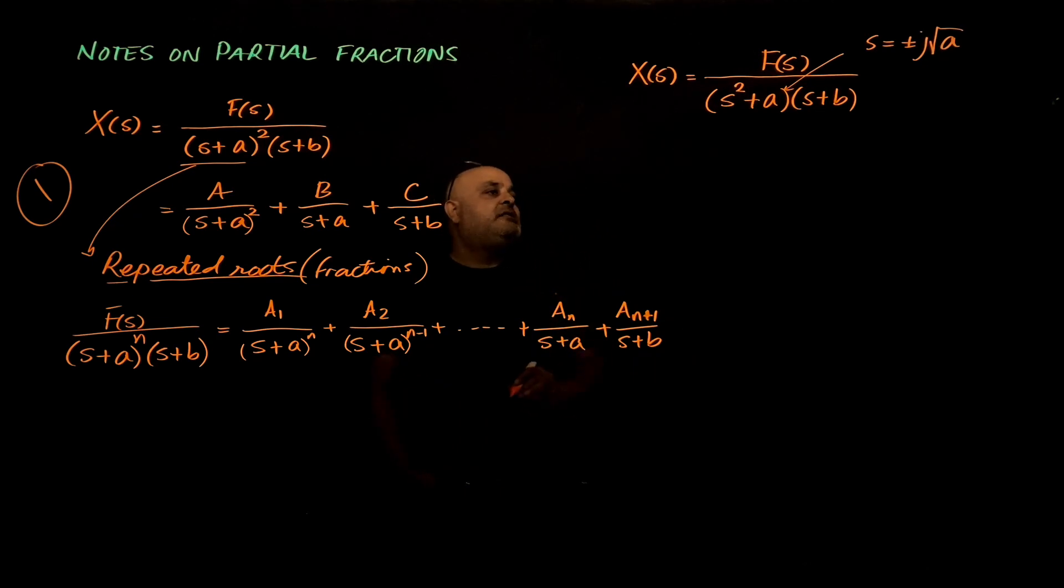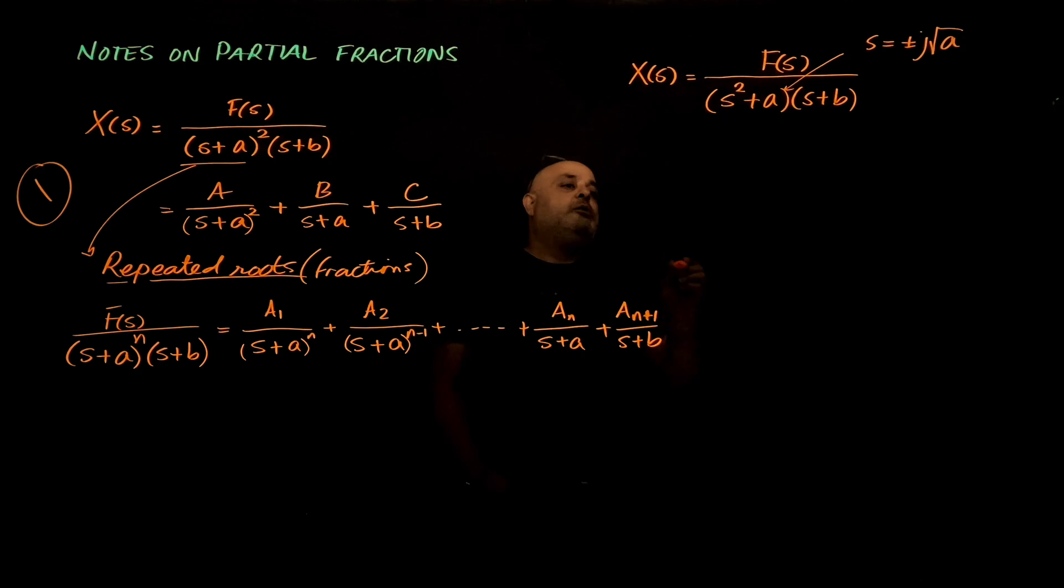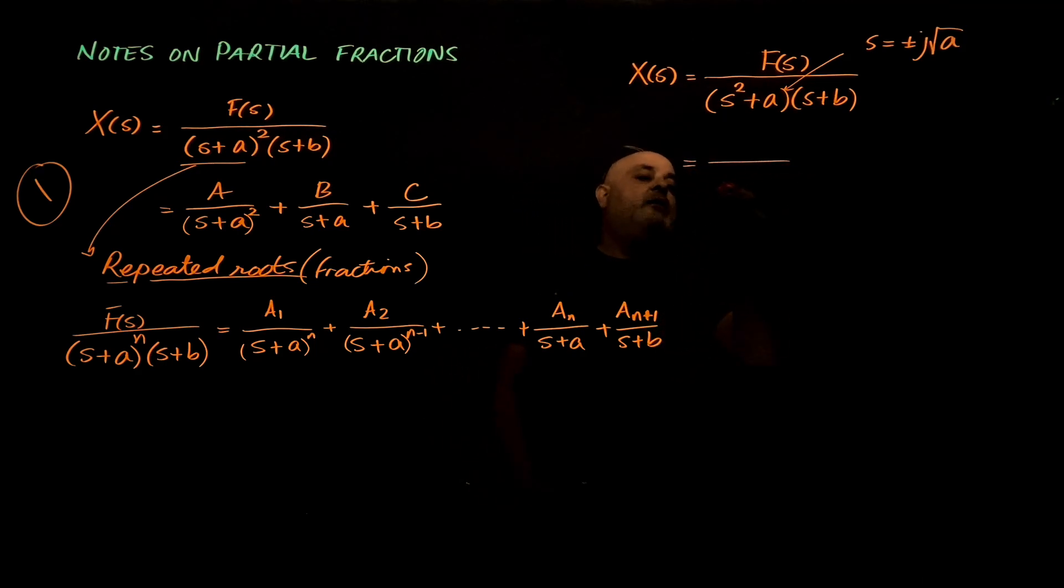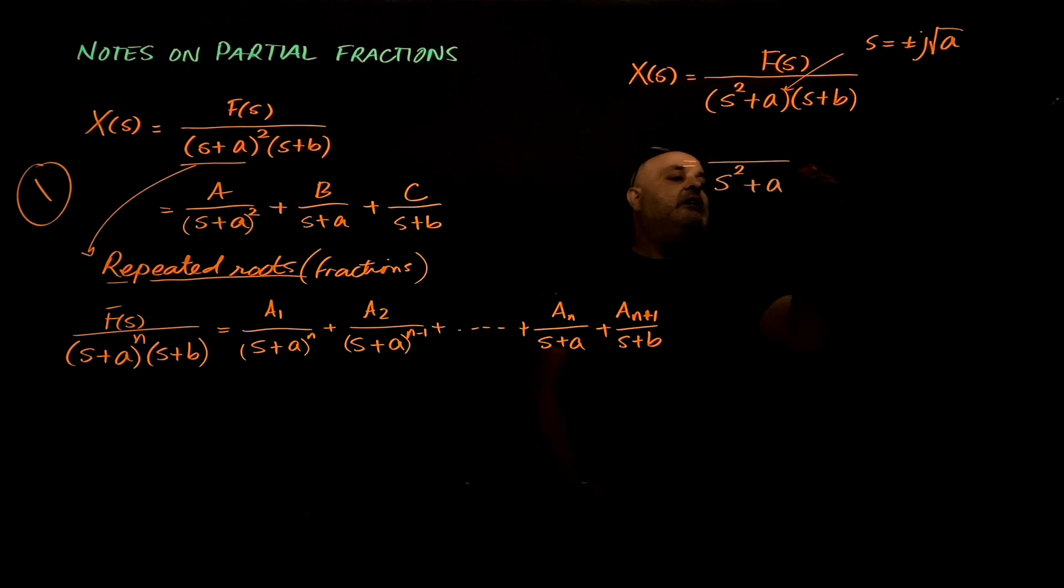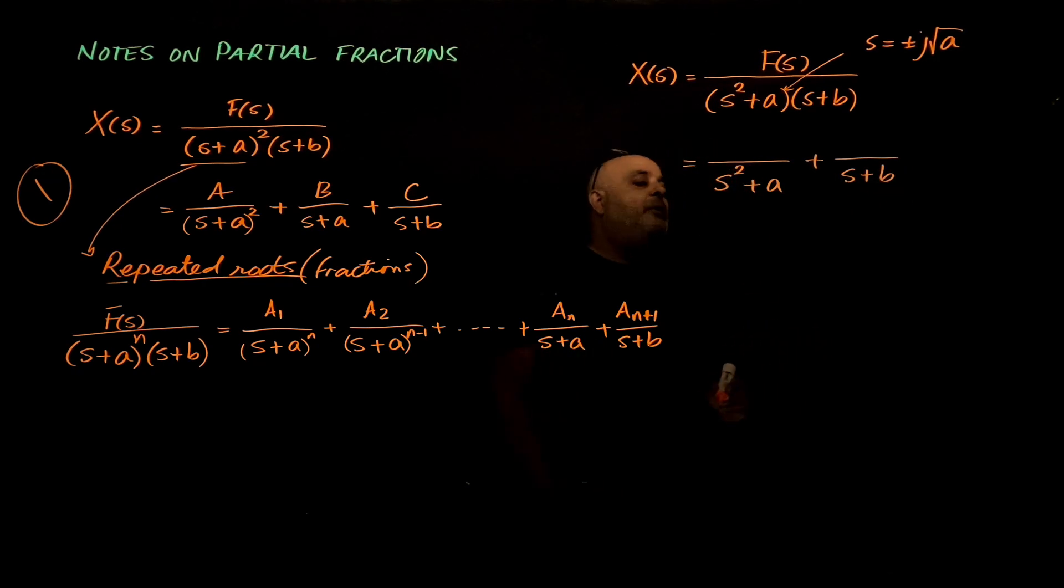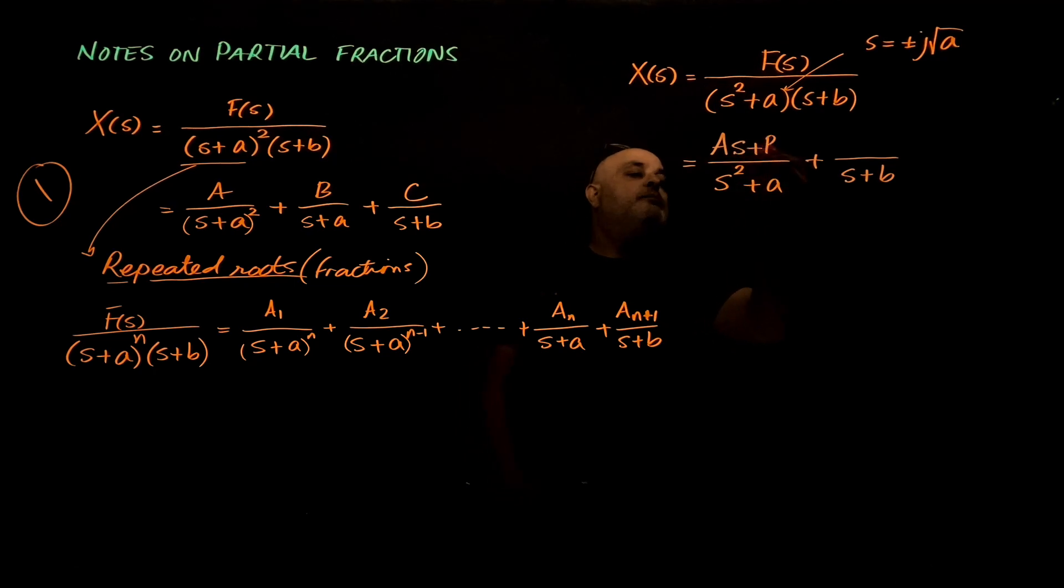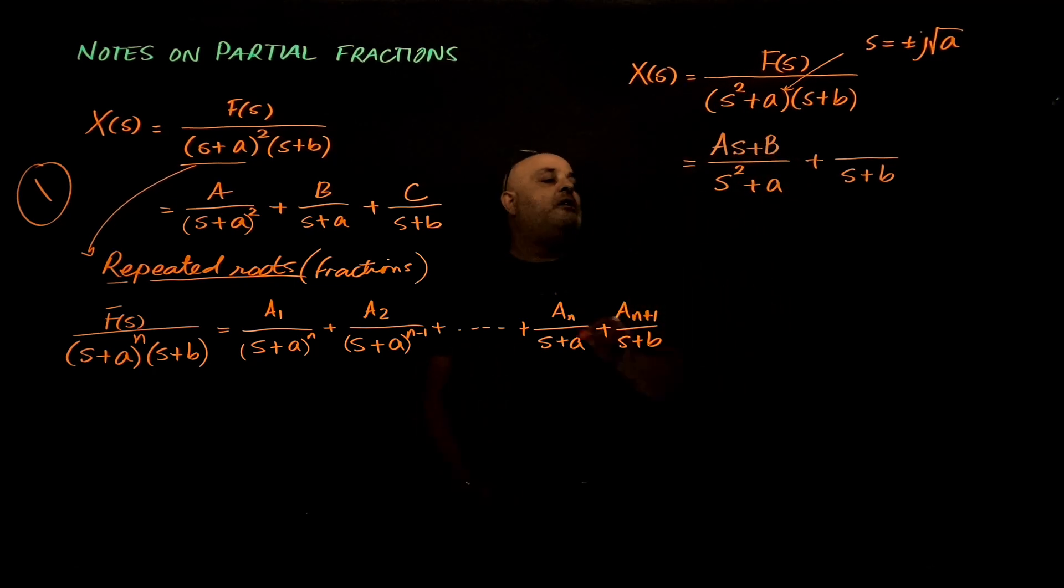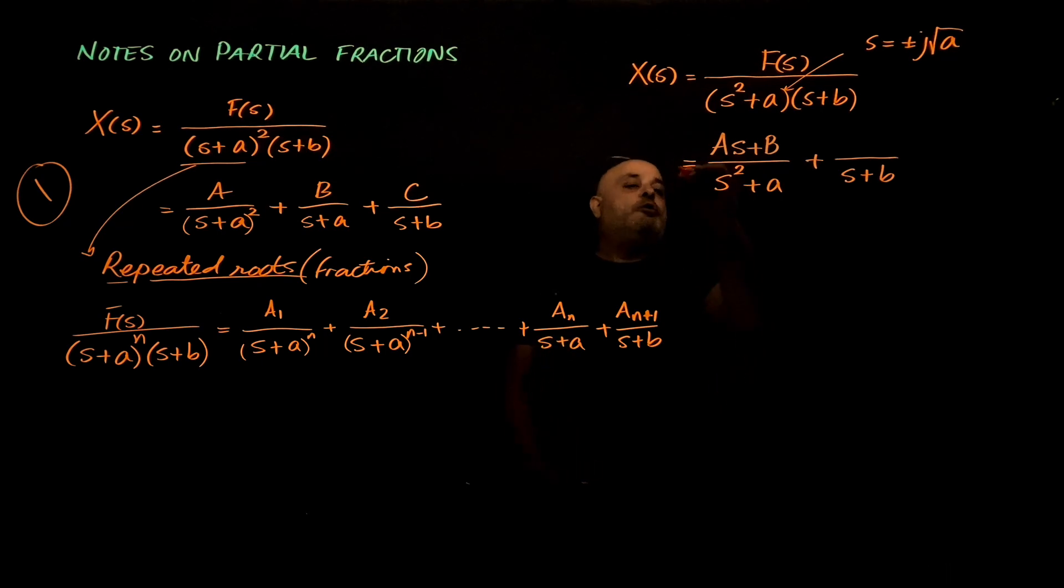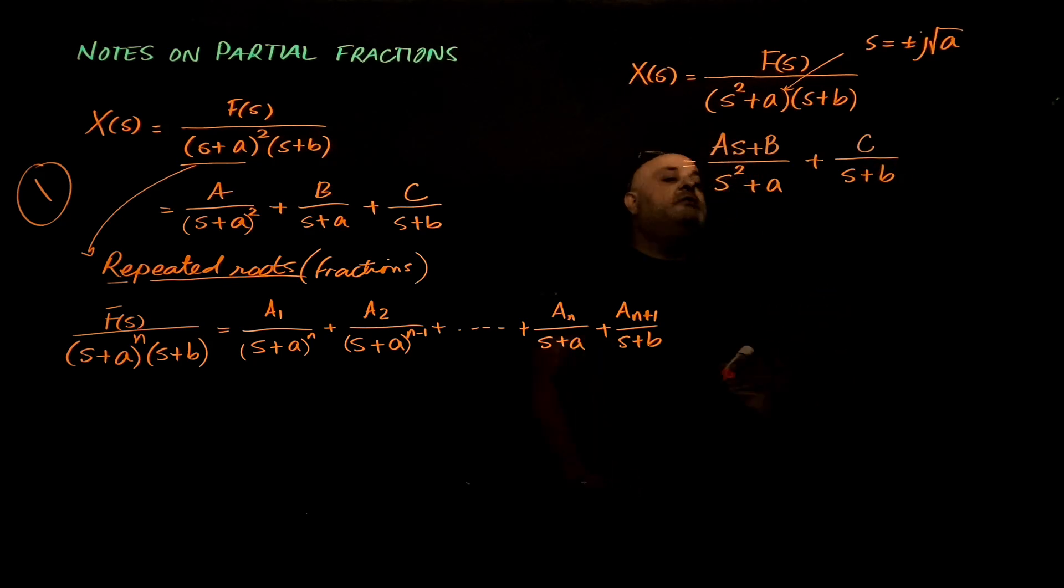So, what we do in this case is I will use two fractions. I will keep this as s squared plus a plus s plus b. But, for this higher order fraction, the order is s squared, I will use As plus b. I will have a polynomial in the numerator, one order less than the denominator, and here I will have c.